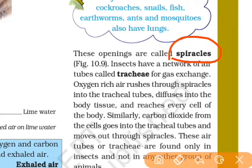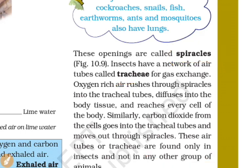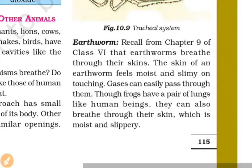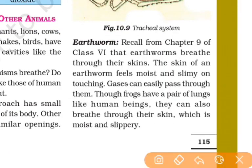Insects like cockroaches breathe through spiracles — small openings connected to a network of tubes in their body.